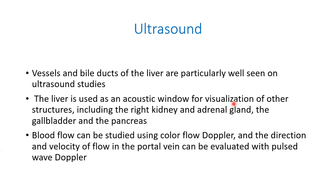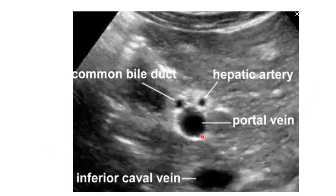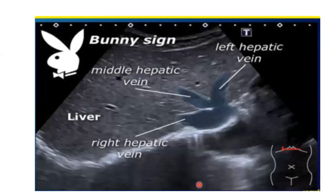On ultrasound, vessels and the bile ducts of the liver are particularly well seen. The liver is used as an acoustic window for visualization of structures including the right kidney, adrenal glands, gallbladder, and pancreas. Blood flow can be studied using color flow Doppler, and the direction and velocity of flow in the portal vein can be evaluated with pulse wave Doppler. Images show the porta hepatis with the portal vein, hepatic artery, and common bile duct, as well as the venous drainage showing the right, middle, and left hepatic veins draining into the IVC.